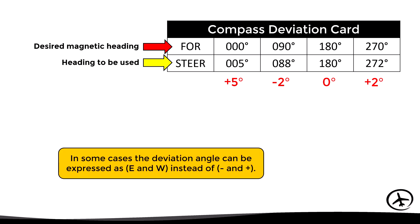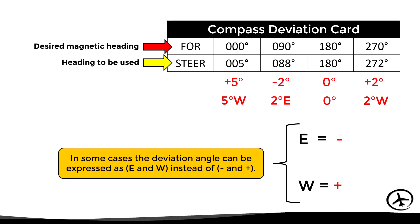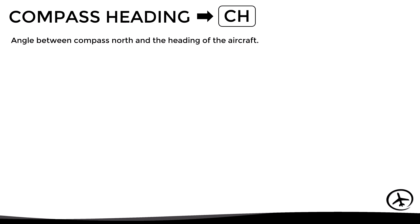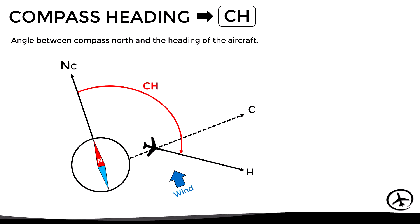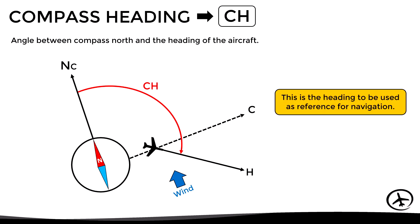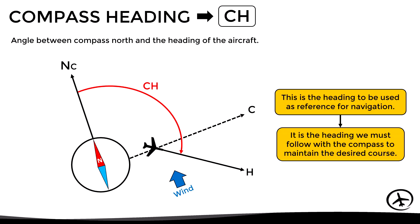Sometimes compass deviation is expressed in terms of east or west instead of plus or minus. In that case, we apply the same rule as with magnetic variation: east is least and west is best. Now we can look at the concept of compass heading, abbreviated as CH, defined as the angle between compass north and the heading of the aircraft. This is the heading to be used as reference for navigation — the heading we must follow on the compass to maintain the desired course, having applied all corrections for magnetic variation, wind, and compass deviation.